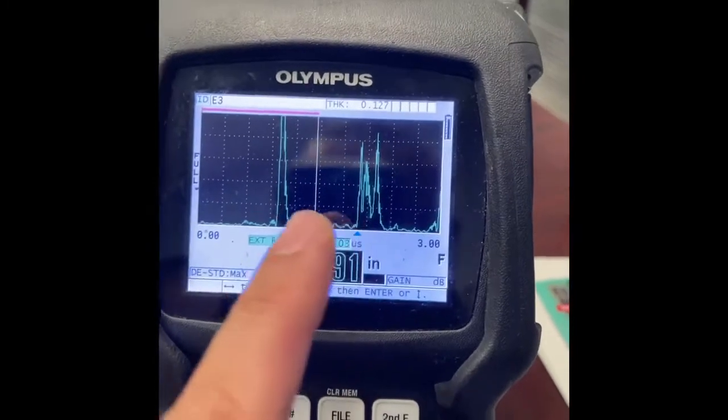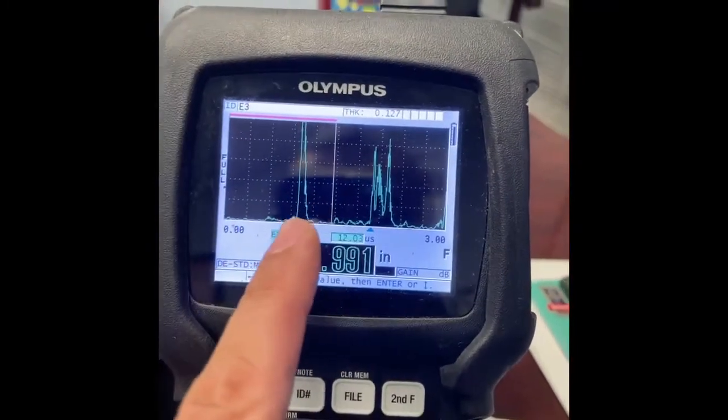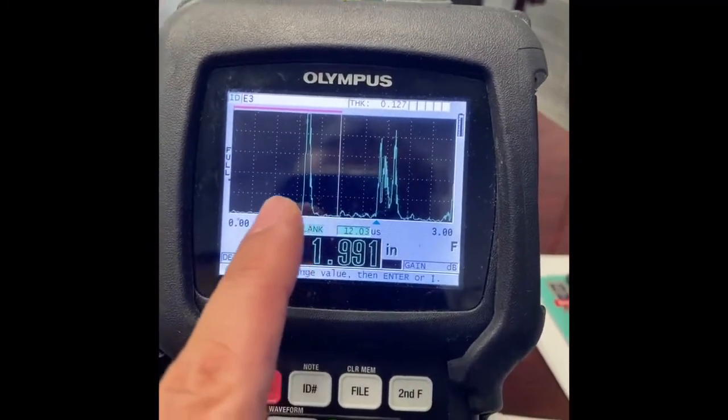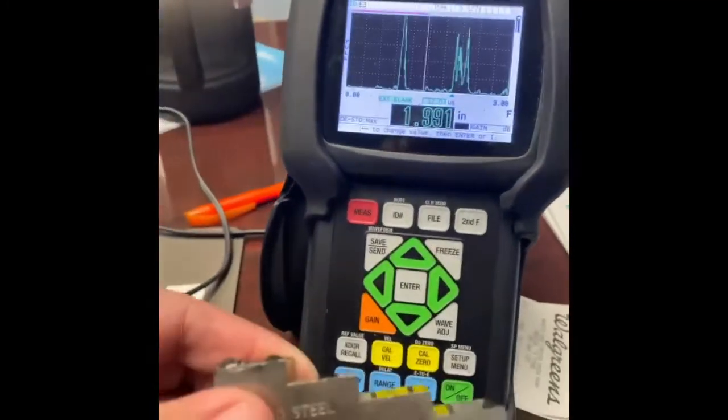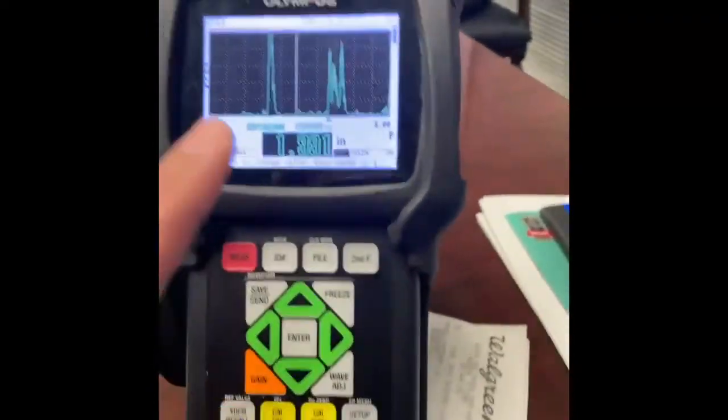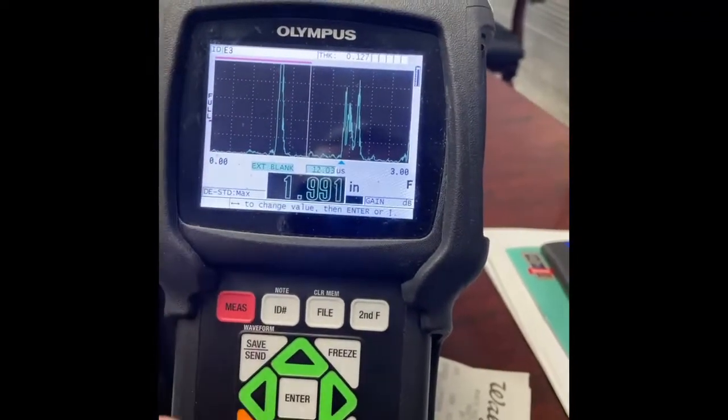So what I'm going to do is I'm going to cal my zero off my first echo and then my cal velocity. Just like you normally would with a step wedge, but I'm going to do it using my extension blank.